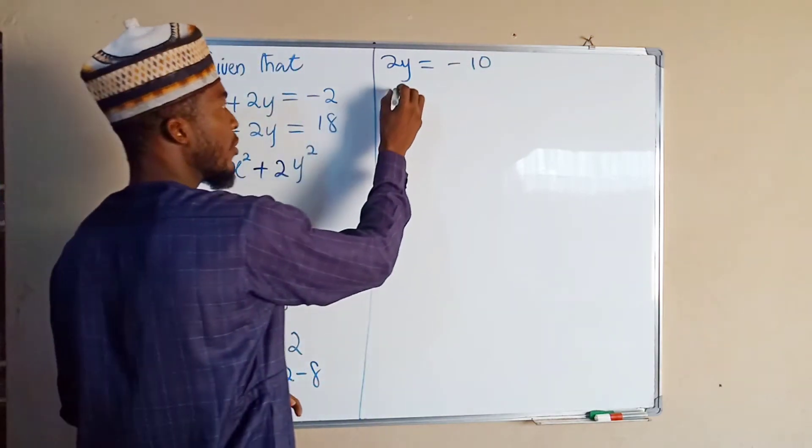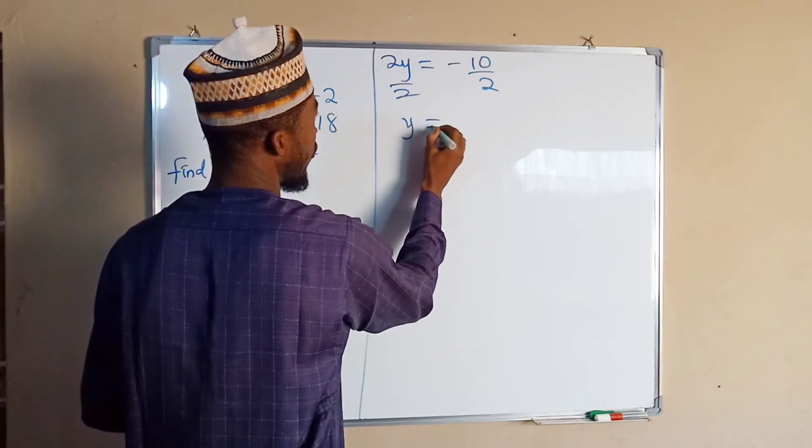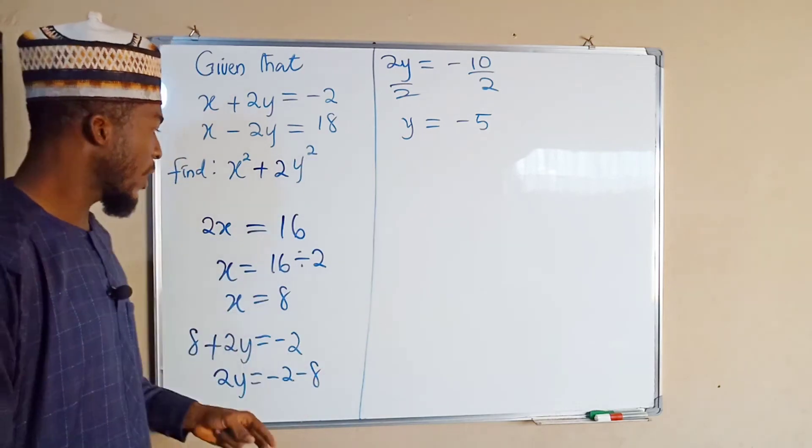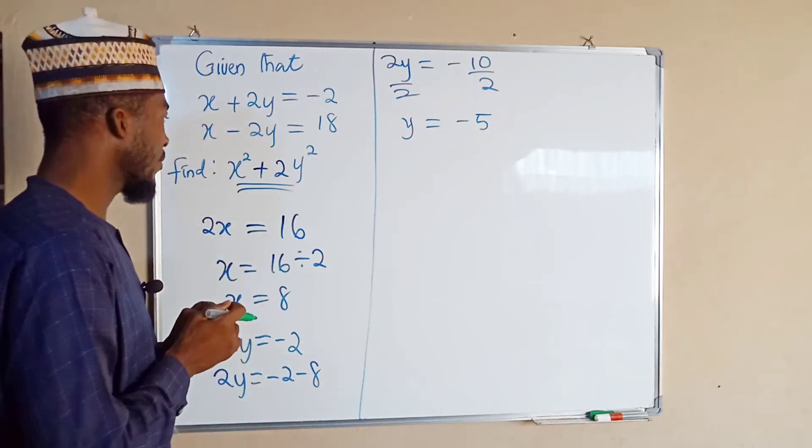By dividing both sides by 2, we have y to be equal to -5. Having obtained the values of x and y, we can go ahead and substitute them into this expression that we are asked to find.